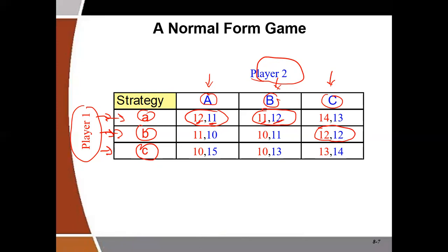Because it's a one-shot simultaneous move game, player one and player two will not know what each other will play. So every manager in an oligopoly firm, when confronted with a one-shot simultaneous move game, needs to do a what-if analysis. You don't know what the other person will play, so you have to do what-if analysis — saying: if I play A and he plays A, this is what will happen; if I play A and he plays B, I'll get 11; if I play A and he plays C, I'll get 14.